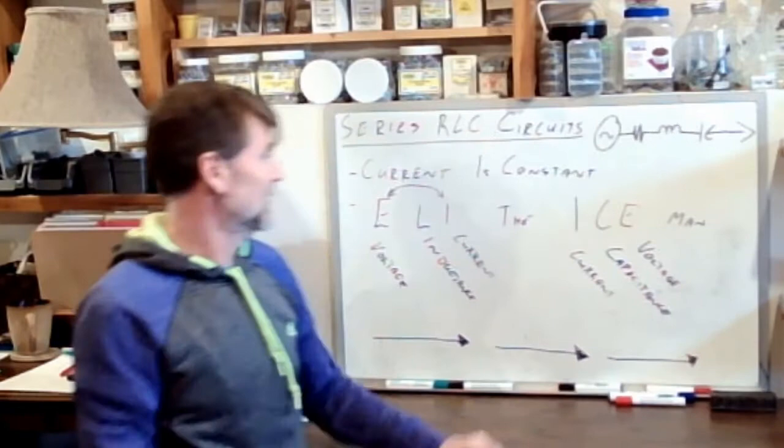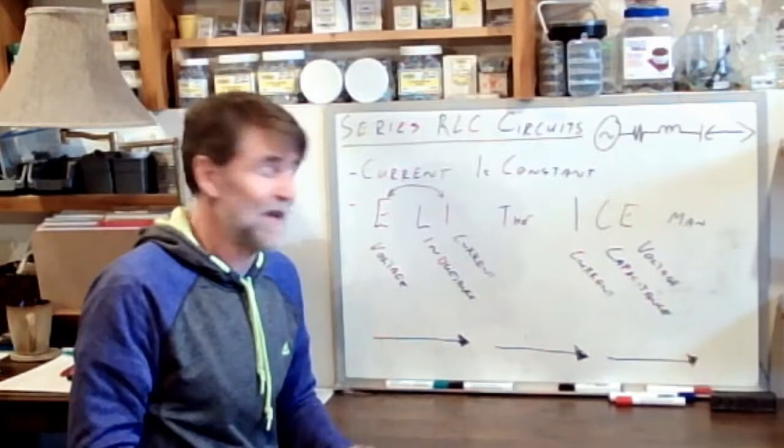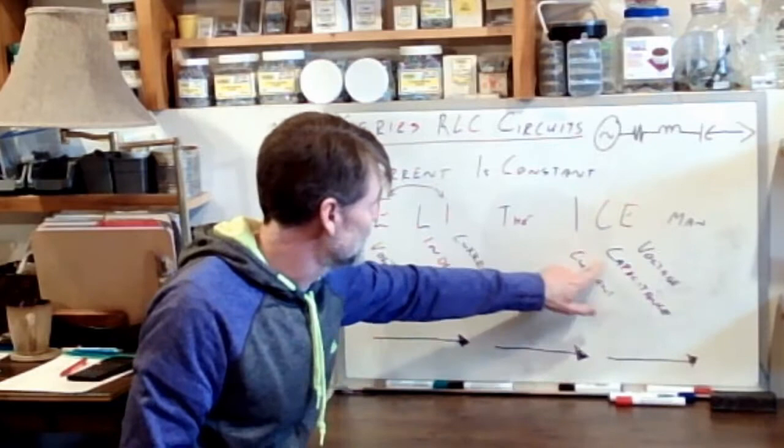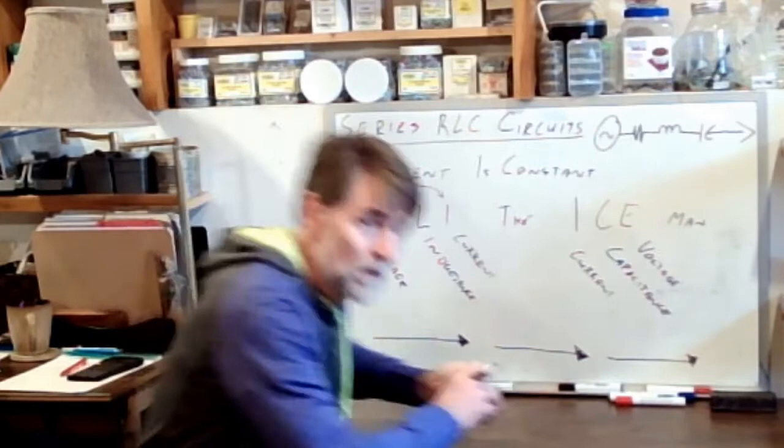Capacitance. So now we can see that in a capacitive circuit, the current leads the voltage. So these are things we already knew from previous lessons, but there it is, a nice way to remember it. Eli, the Iceman. Current lags the voltage in an inductive circuit, and current leads the voltage in a capacitive circuit.